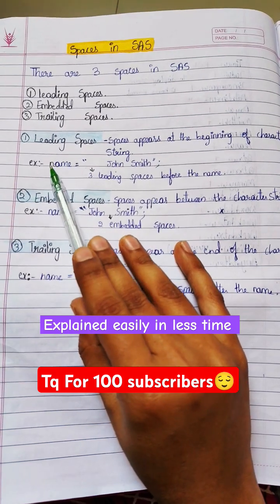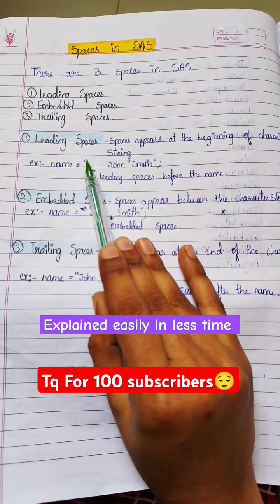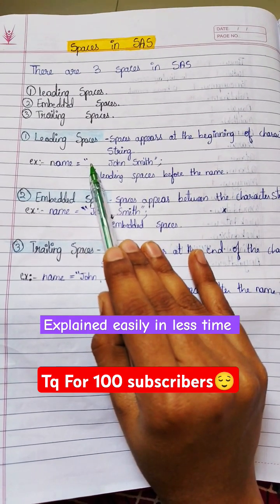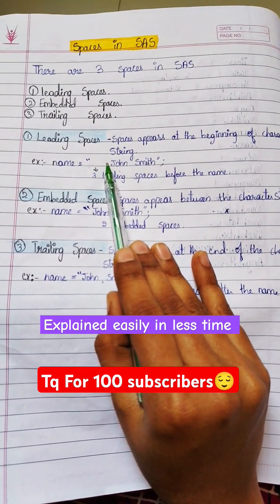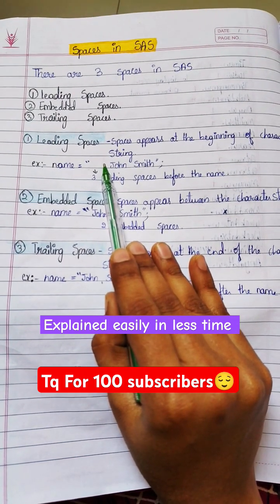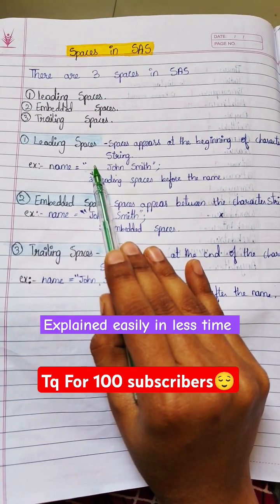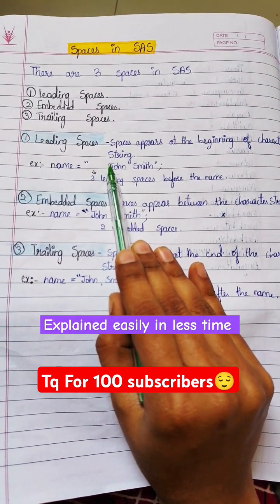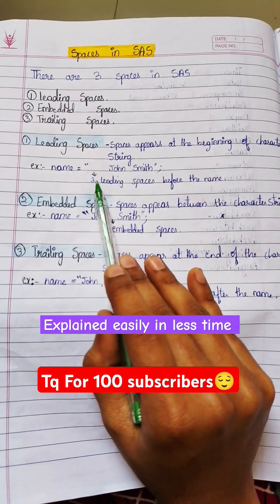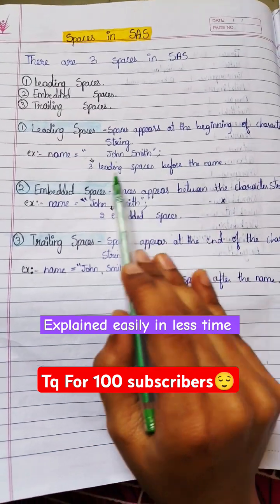This is my name. Name is nothing but my variable. It is assigned using double quotations. You can see I have given three spaces here before the value — at the beginning of the character string. So, spaces that appear at the beginning of the character string are nothing but leading spaces. We have three leading spaces before the name.